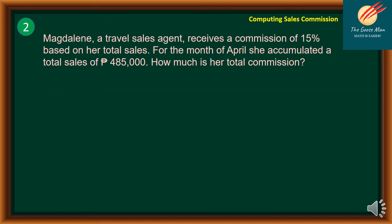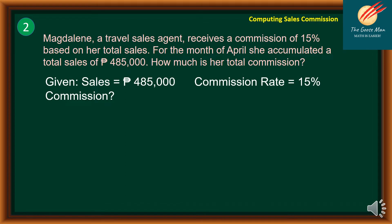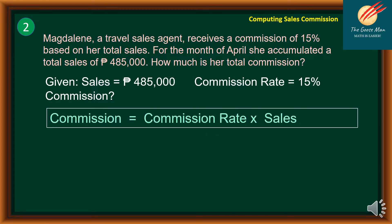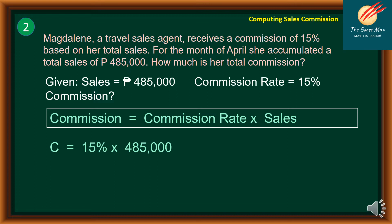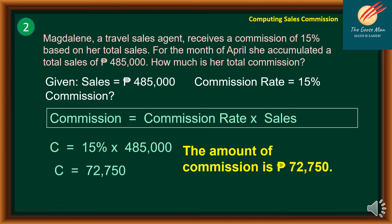Problem 2: Magdalene, a travel sales agent, receives a commission of 15% based on her total sales. For the month of April, she accumulated total sales of 485,000 pesos. The commission rate is 15% and commission = commission rate × sales = 15% × 485,000 = 72,750 pesos.